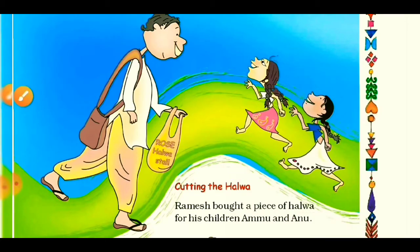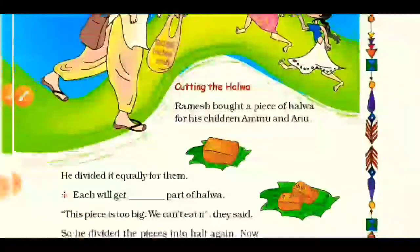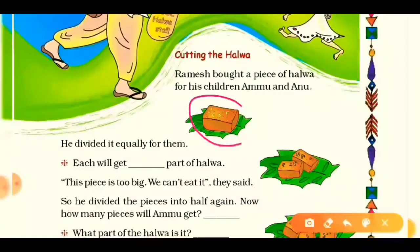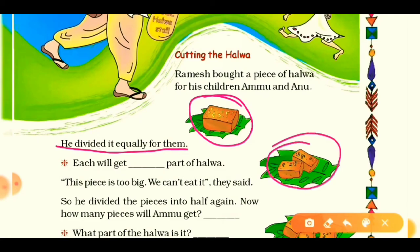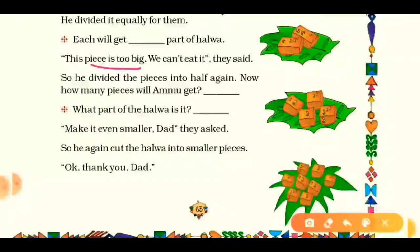Ramesh bought a piece of halwa for his children Ammu and Anu. Here is Ramesh and here are his two children. You can see the whole halwa. He divided it equally for them — the halwa is divided into two parts because there are two children. So each will get one-half part of the halwa.